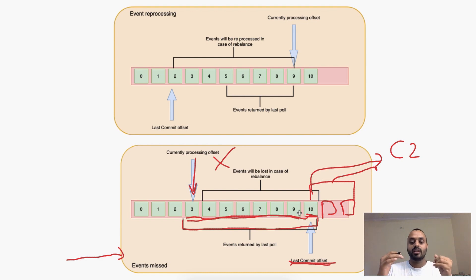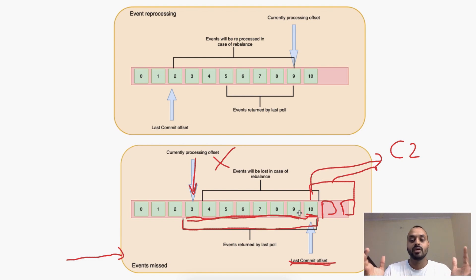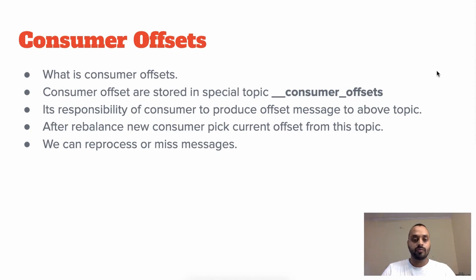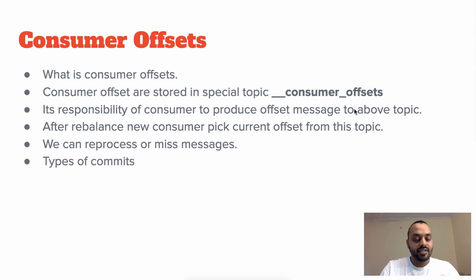From these two examples we know we need to commit this offset very carefully so that we do not miss or reprocess any messages. Let's discuss the committing strategies. First is auto commit. How auto commit works is: whenever we poll the data, the largest offset of that polled data gets committed.